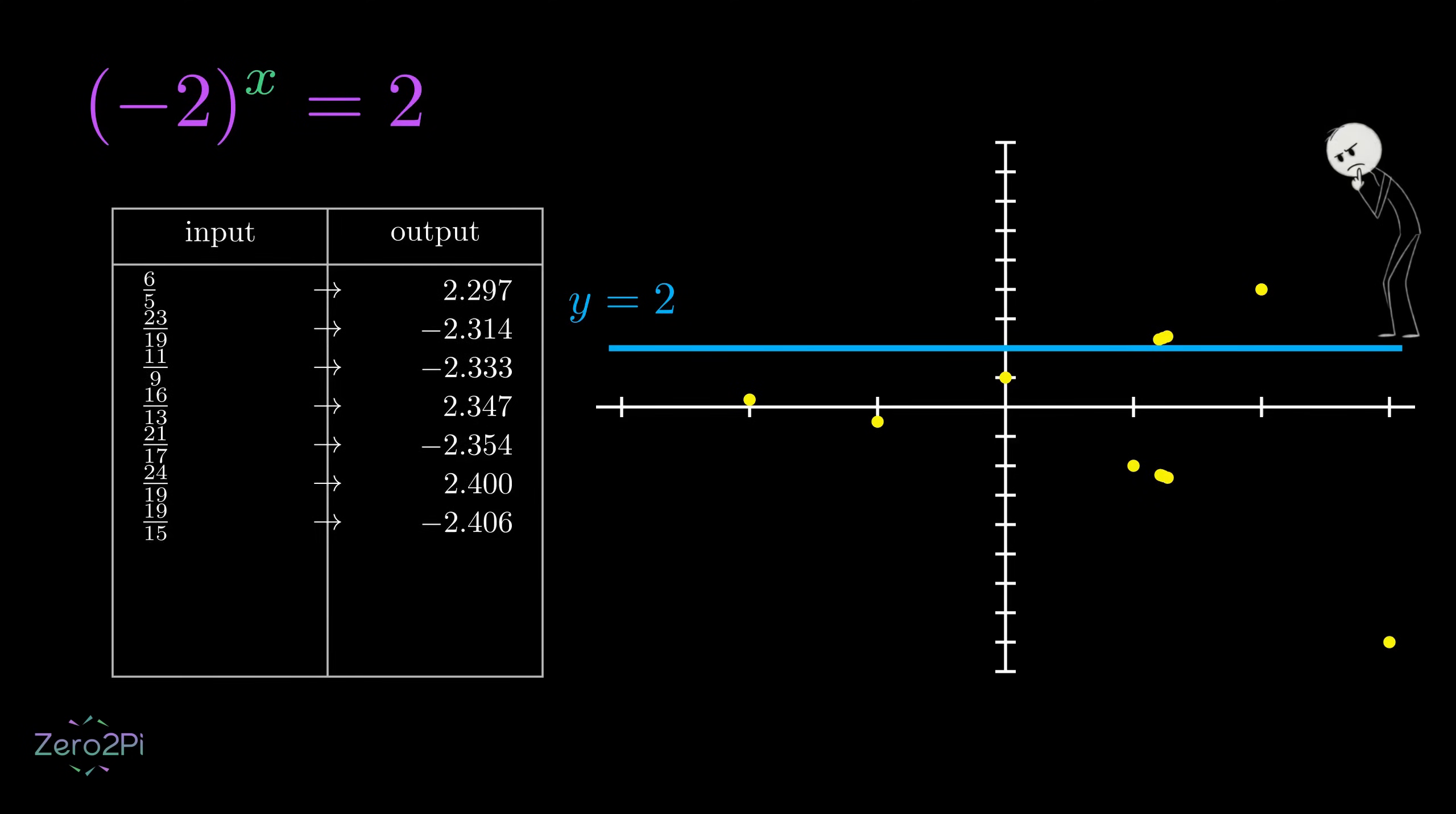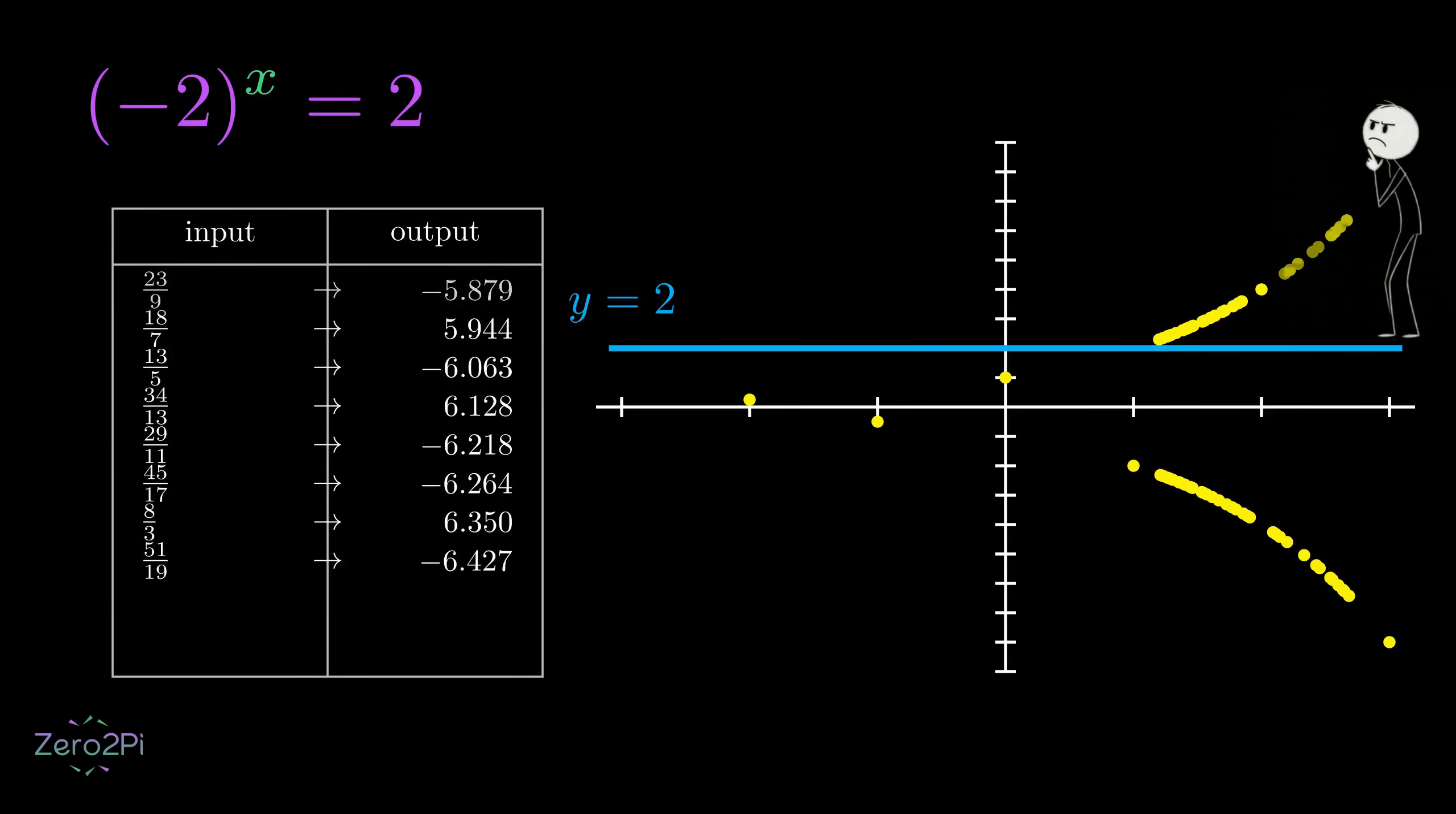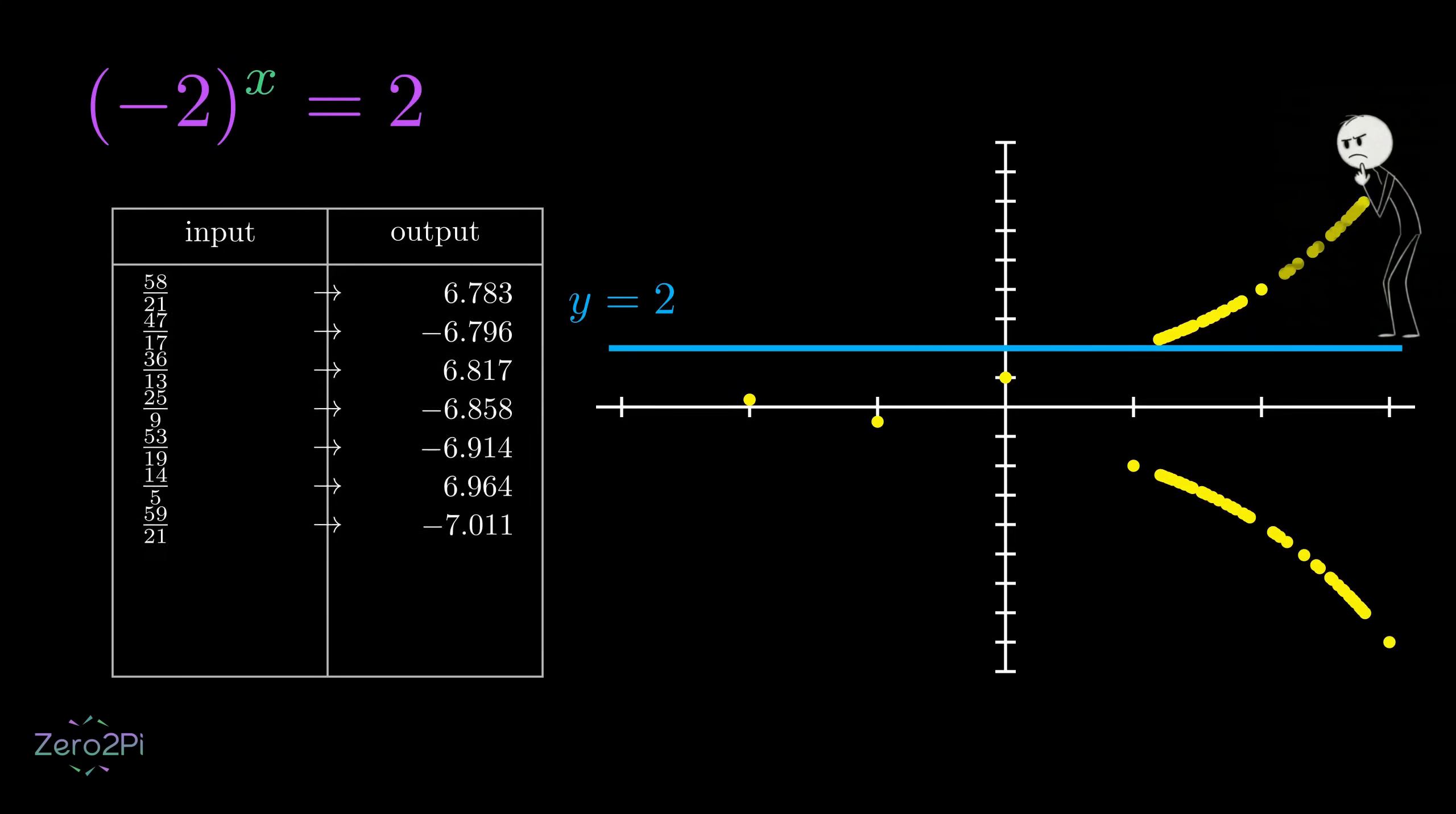After testing tons of real numbers—positive, negative, fractions, you name it—we're still not getting anywhere close to 2. The yellow dots are scattered all over the place, but not a single one touches that blue line. This means we just proved there's no real number solution to this equation.